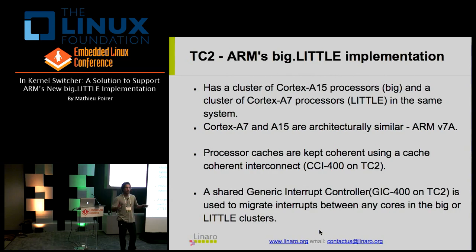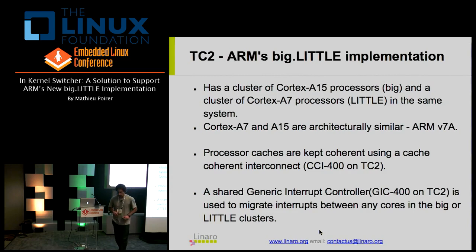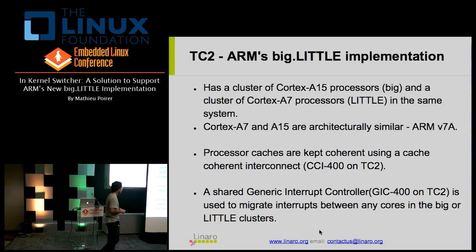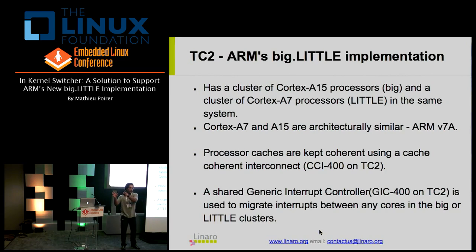Normally you want a system with the same number of cores in both clusters. The A15 and A7 are architecturally similar; they both implement the ARM V7A architecture. The caches are snooped with a cache-coherent interconnect, the CCI-400, and there's also an interrupt controller that allows interrupts from any source to be routed to any destination — any processor to any processor.